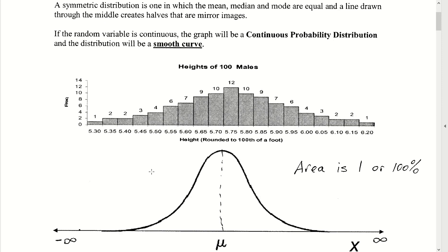As an example, if we took the heights of 100 males and we recorded those values and graphed them, we would see a very familiar shape. We call that a symmetric distribution, where the most common value — the mode — would be a height of about 5.75 feet. As you go either left or right of that mode, the values decrease in a symmetrical fashion, and what we get is a bell-shaped curve.